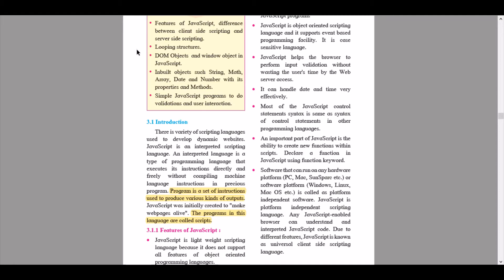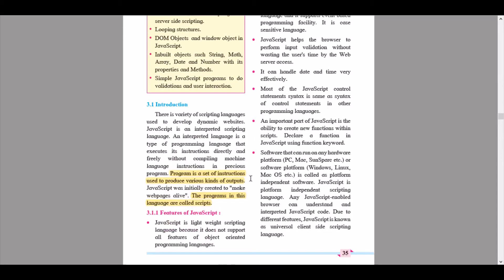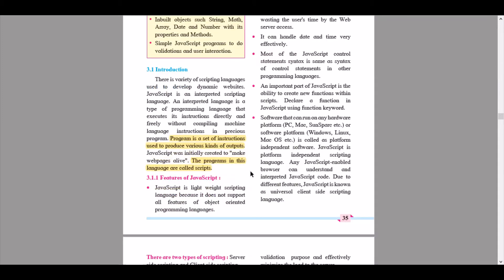JavaScript is an interpreted scripting language. An interpreted language is a type of programming language that executes its instructions directly and freely without compiling machine language instructions in precious programming. So this definition is important. Please mark this. Just remember that the introduction part is also very important.